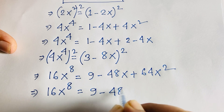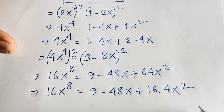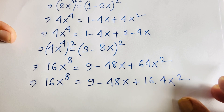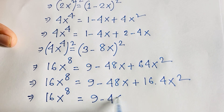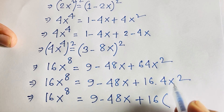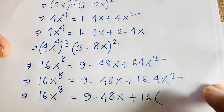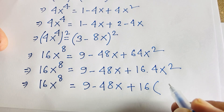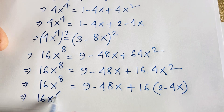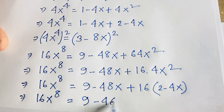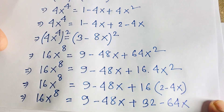So 16x⁸ = 9 minus 48x plus 64x². Now 64x² = 16 times 4x². We know 4x² = 2 minus 4x, so 64x² = 16 times (2 minus 4x) = 32 minus 64x. Substituting gives 16x⁸ = 9 minus 48x plus 32 minus 64x.